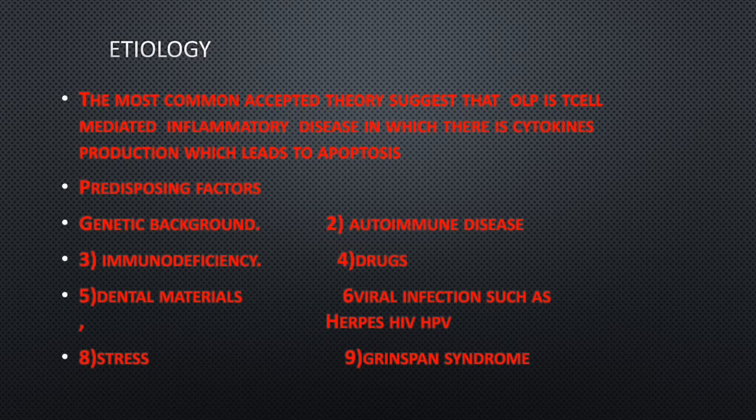There are several predisposing factors that contribute to oral lichen planus, including genetic background, autoimmune disease, and immunodeficiencies. Some drugs can trigger it, as can dental materials such as ill-fitting dentures or overbites. Viral infections such as herpes, HIV, and human papillomavirus can also trigger it, as can stress. Grinspan syndrome — involving diabetes mellitus and hypertension — is also associated with oral lichen planus.